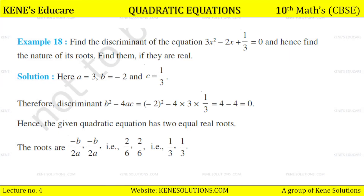Example 18: Find the discriminant of the equation 3x² − 2x + 1/3 = 0 and hence find the nature of its roots. Here a = 3, b = −2, and c = 1/3. So b²−4ac = (−2)² − 4×3×(1/3) = 4 − 4 = 0. Since discriminant = 0, the equation has two equal real roots. The roots are −b/2a = 2/6 = 1/3 each.